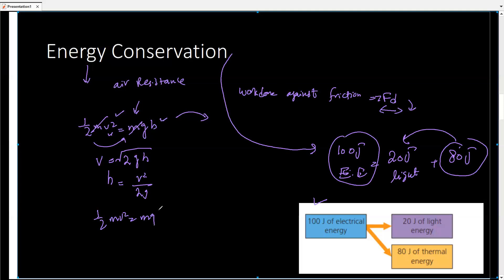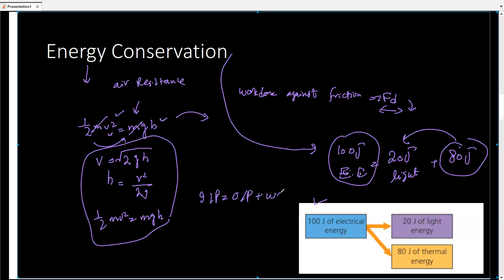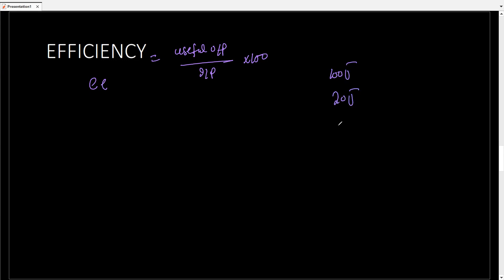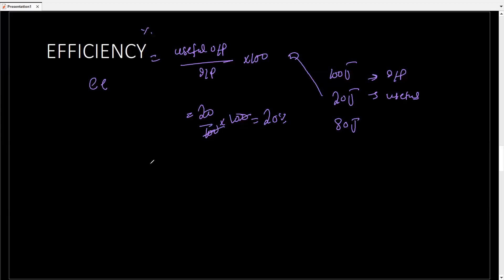The key formulas are: ½mv² = mgh, and input = output + waste energy. From this we move to efficiency of a system, which is defined as useful output over input. The formula is: efficiency = (useful output / input) × 100. Using our example — input 100 J, output 20 J, waste 80 J — efficiency = 20/100 × 100 = 20%. This is a 20% efficient system.